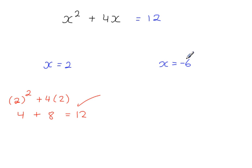Doing the same with the minus 6. So x squared plus 4 times x. So minus 6 squared is 36, and 4 times minus 6 is minus 24, which gives you 12. So these are the correct solutions to this equation.